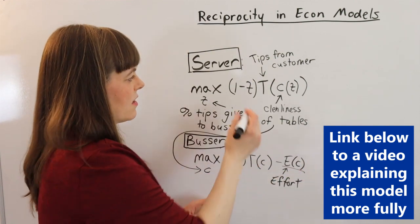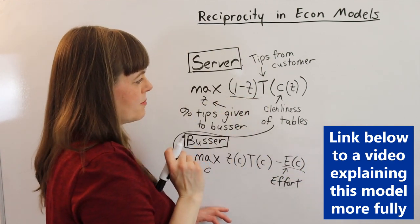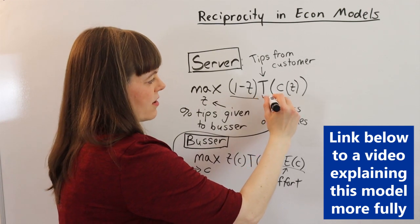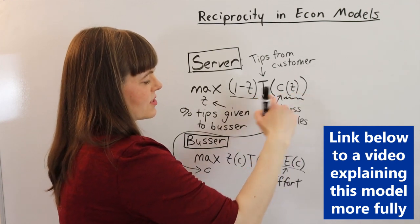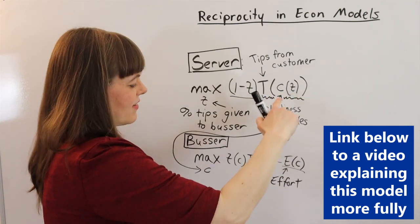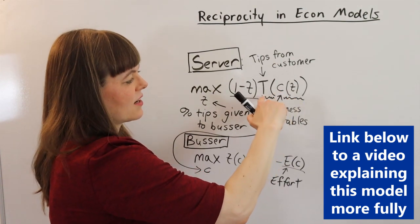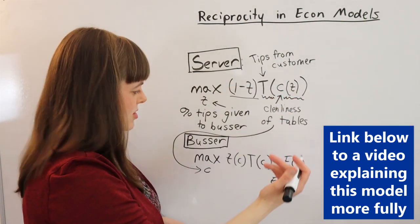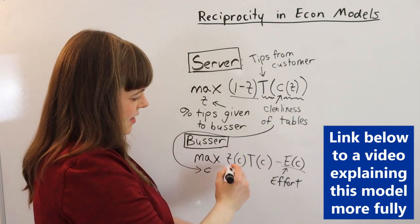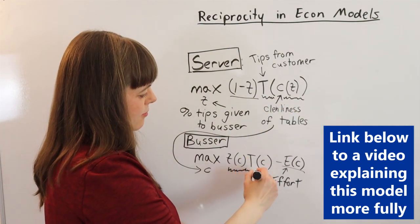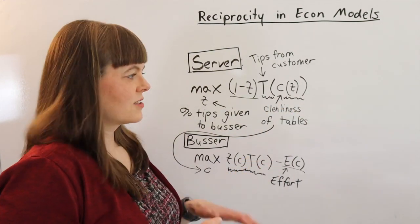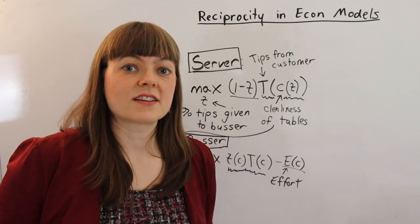Her cost is the loss of income from giving her tips. Her benefit to giving more tips is that it incentivizes the busser to make the tables more clean, and that clean table will generate more tips. His benefit is the money he gets from her out of her tips. So the question I'm going to ask you is, is this a situation that you would call reciprocity?